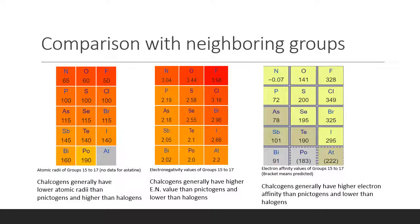When we do a comparison between the groups, chalcogens have a lower atomic radius than pnictogens and higher than that of halogens. However, they have higher electronegativity than pnictogens and lower than halogens, and a similar trend is observed for electron affinity. All of this is because of the increasing effective nuclear charge across the period.